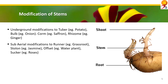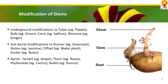There are also several subarial modifications such as runner — example grassroot, meralia; stolon — example mint, jasmine, strawberry; offset — example water plant, pistia; and sucker — example roses, chrysanthemum. There are also aerial modifications such as stem tendril, found in grapes; stem thorn, found in roses, lemon, plum; phylloclade, found in cactus; and cladode, found in ruscus.